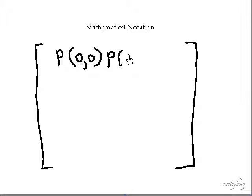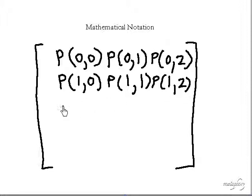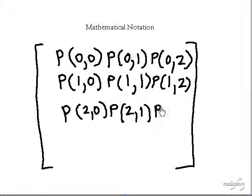And then the next element in the matrix would be P(0,1), the next element would be P(0,2). We'll fill in the rest of the matrix. We'll assume that this matrix is a 3 by 3 matrix which designates a 3-state Markov model.